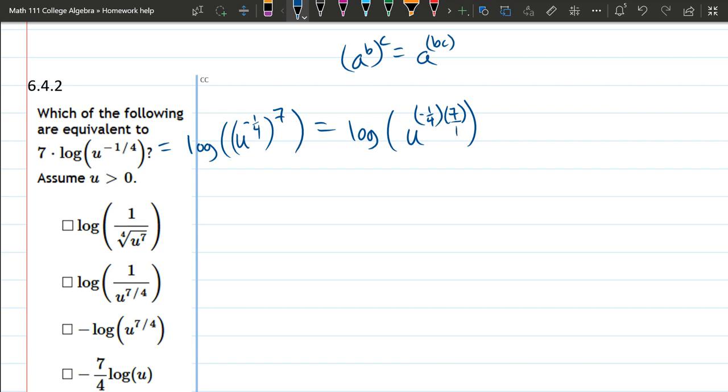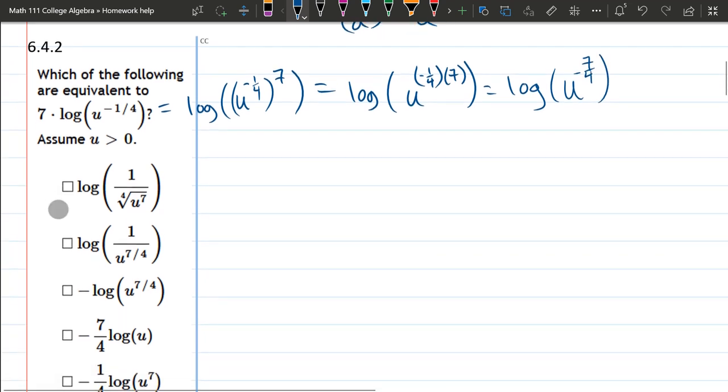You can think of seven as seven over one when you multiply. So we're going to have seven negative one fourths or negative seven fourths. Those are some equivalent versions of the original.